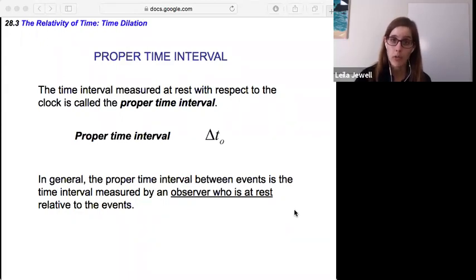So the astronaut is at rest relative to the light traveling up and down. Versus the Earth observer looking at the astronaut flying by, sees that relative motion or is moving relative to the astronaut and the clock. So because the astronaut is right with the clock moving at the same rate as it, the astronaut's at rest relative to the clock and is able to measure this proper time interval.